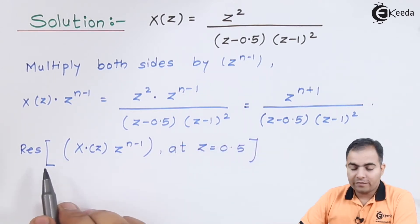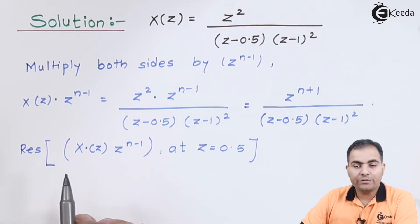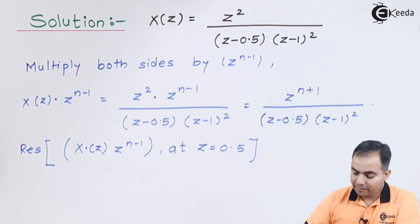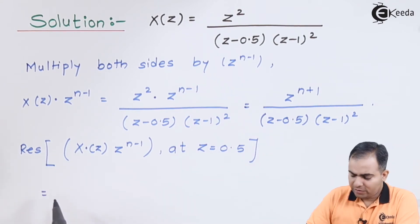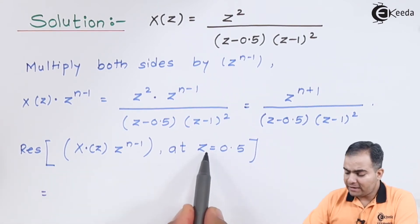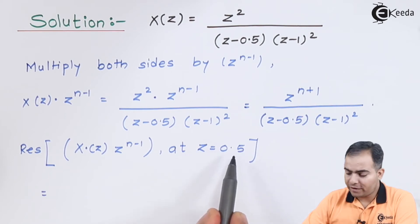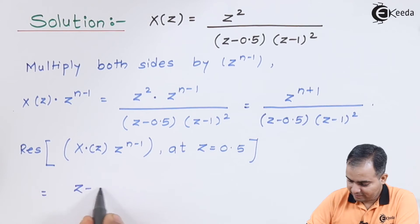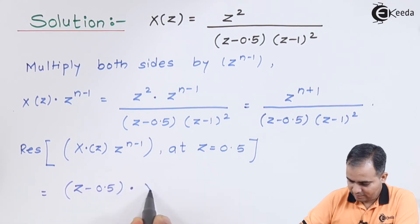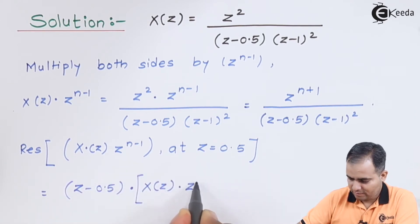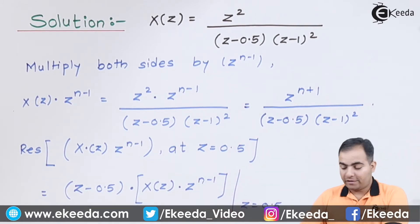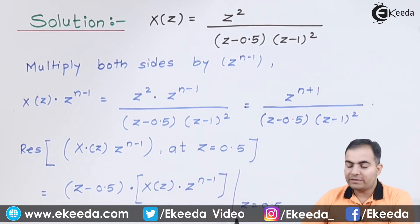We are going to calculate the residue of X(Z) · Z^(n−1) at Z equals 0.5. Simply multiply Z minus 0.5 with X(Z) · Z^(n−1), and then after multiplying, substitute Z equals 0.5 in that result.